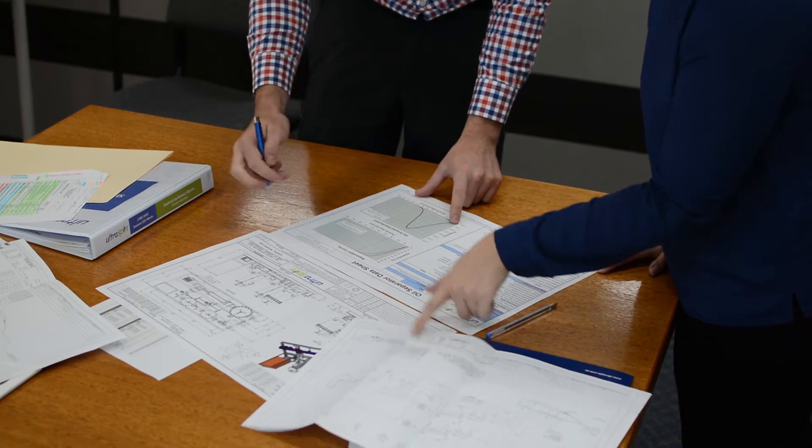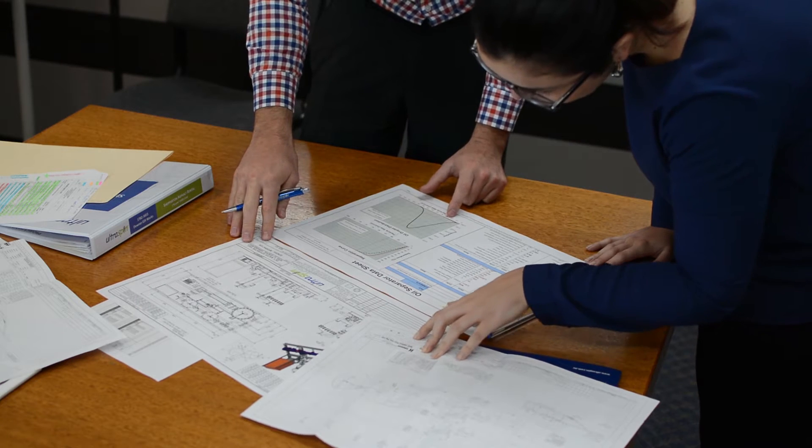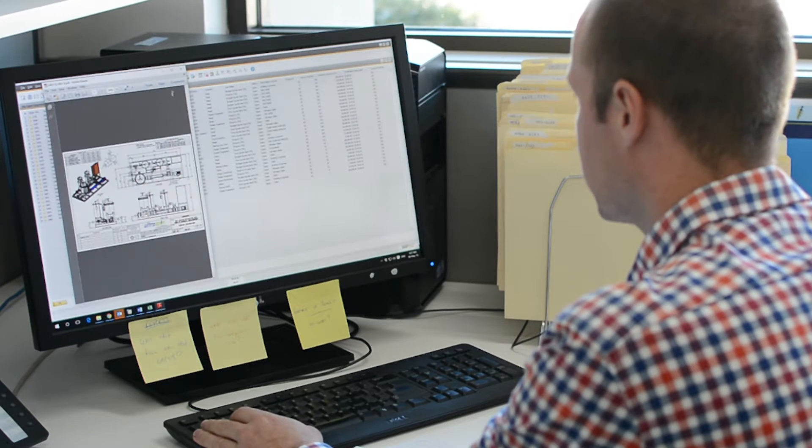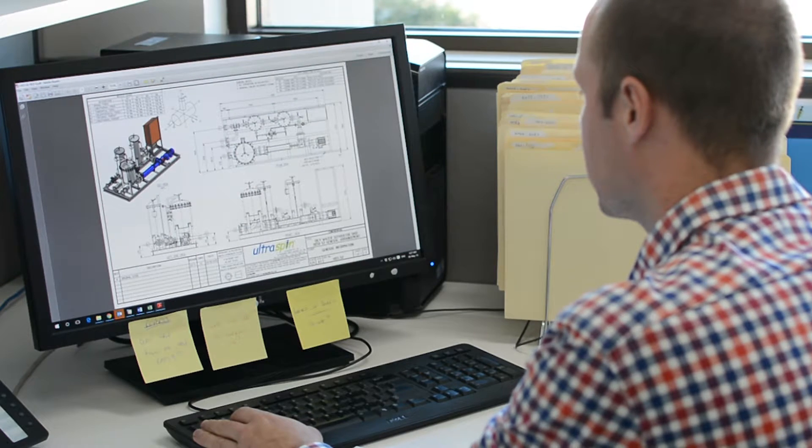Process design is the single most important thing that an oily water treatment vendor can offer its customers. This process involves collecting information on those design factors and using that information to determine the right kind of solution. If you don't collect this information then you run the risk of spending a lot of money implementing the wrong kind of solution and then having to spend a whole lot more money replacing that system with the correct one.